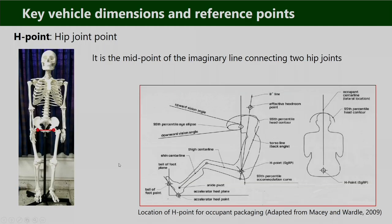The next important reference point is the H point, or hip joint point. Looking at the skeleton, there are two hip joints — right and left. The midpoint of these two hip joints is the H point. If we connect the two hip joints with an imaginary line, the midpoint of that line is the H point. From the side view it appears at the side of the hip joint, but from the front or back view it is at the middle of the two hip joints.